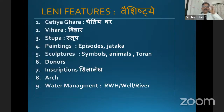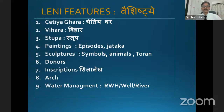What are the features of the leni? When you see the leni, what is to be seen? First is the Chetiyagara, then Vihara, then Stupa, then paintings. Paintings consist of episodes of the life of the Buddha, Jataka stories also. Then sculptures, symbols, animals, and Torana — the banner-like structure at the entrance of the Stupa gate.